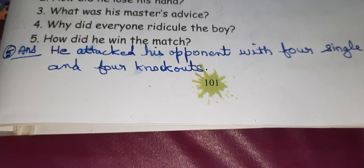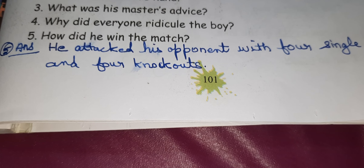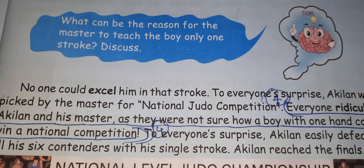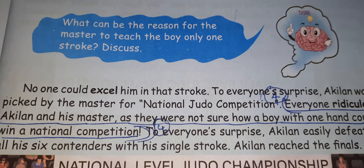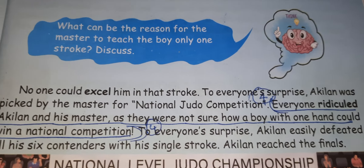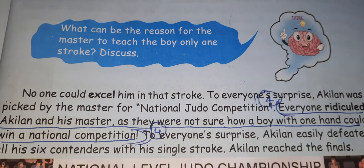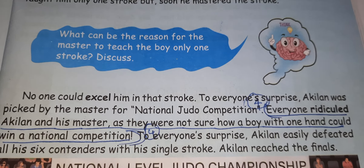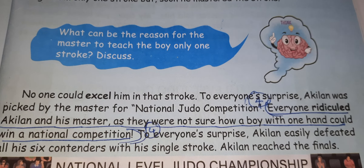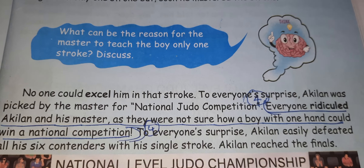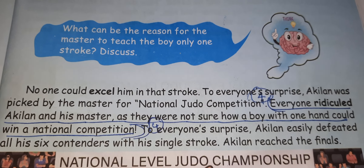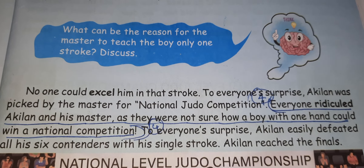Fourth question: Why did everyone ridicule the boy? Everyone ridiculed Agilan and his master as they were not sure how a boy with one hand could win a national competition.